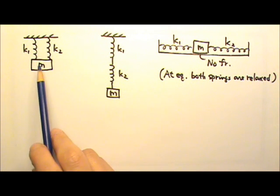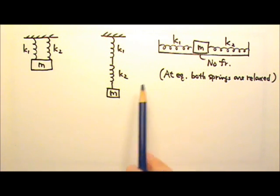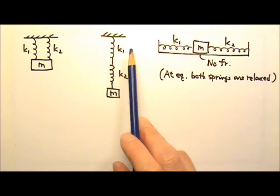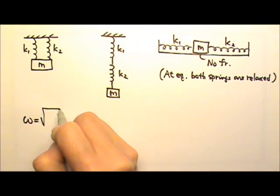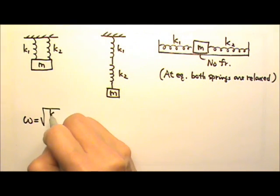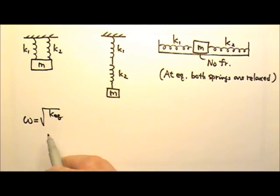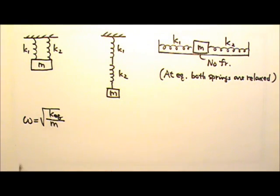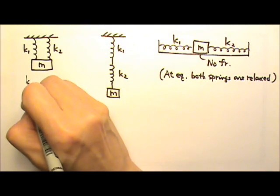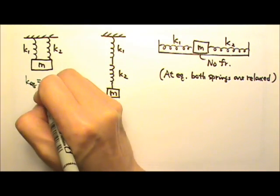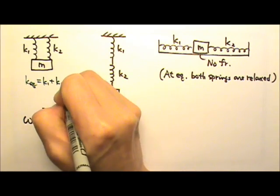We can also have spring-mass oscillators with combinations of springs. In these cases, to find the omega, all we have to do is find the equivalent spring constant, and the square root of k over m would be the omega for the oscillators. If the springs are connected in parallel, the equivalent spring constant is k1 plus k2.